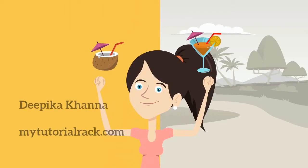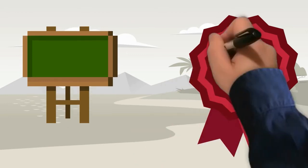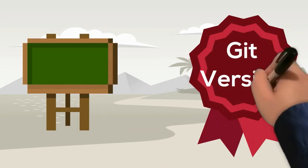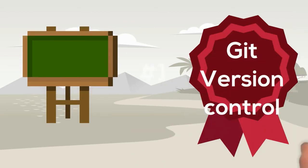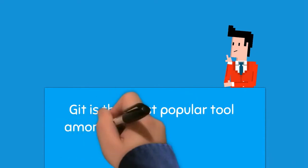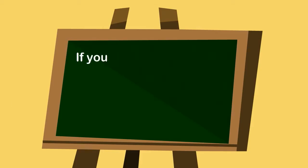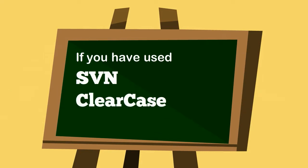Hello guys, this is Deepika from MyTutorialRack.com. This course is about Git version control. Git is the most popular tool among web developers to keep track of their project changes. If you have used SVN or Clearcase in your projects before, then you have used version control in the past.